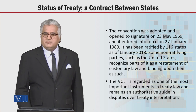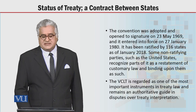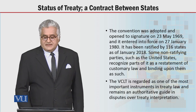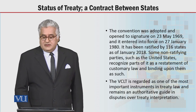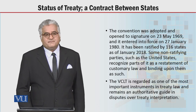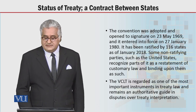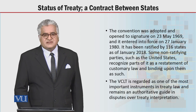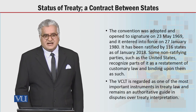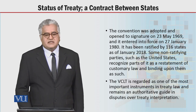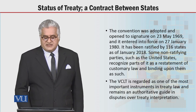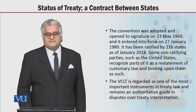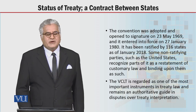My dear students, you would be enlightened to know that the Convention was adopted and opened to signature on 23rd May 1969. It has been ratified by 116 states as of January 2018. The Vienna Convention on the Law of Treaties is regarded as one of the most important instruments in treaty law and remains an authoritative guide in disputes over treaty interpretation. Hope you have understood the topic. Thank you very much indeed.